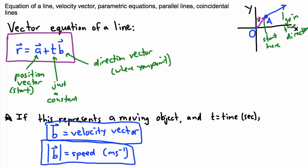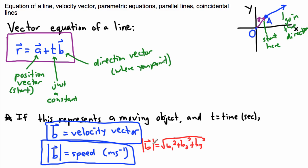Don't forget that the magnitude is contained in there. Remember, the square root of b1 squared plus b2 squared plus b3 squared, and so on — that's how we find the magnitude of b. We just take all the components: the square root of the sum of all the squares of the components of it.